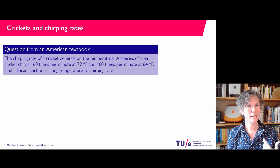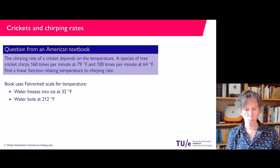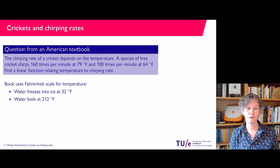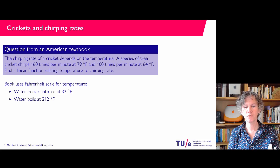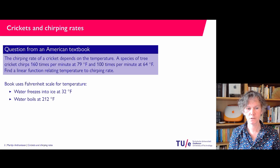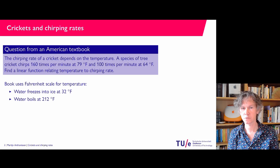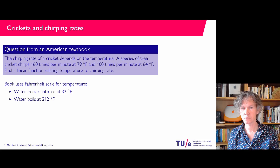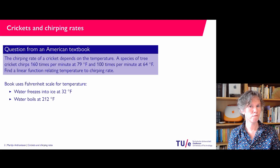So before considering this problem, let's look at a related problem. The book uses the Fahrenheit temperature scale, which you can define by the following two characteristics: the dependence between Celsius and Fahrenheit is linear, and we have two data points. Water freezes into ice at 32 degrees Fahrenheit, which is zero degrees Celsius, and it boils at 212 degrees Fahrenheit, which is 100 degrees Celsius. Using these two facts we can find the relation between temperature in Fahrenheit and Celsius.